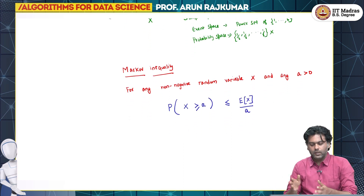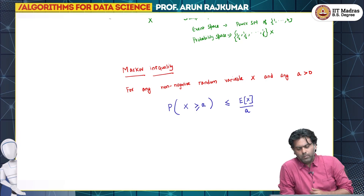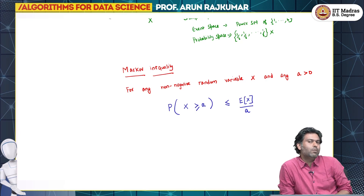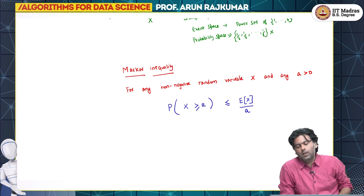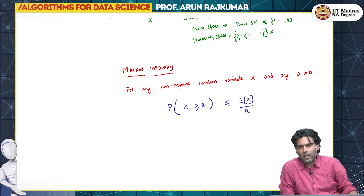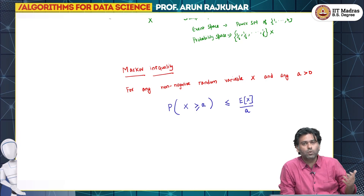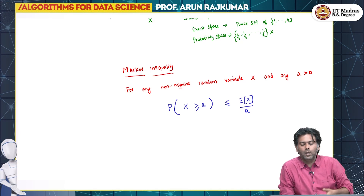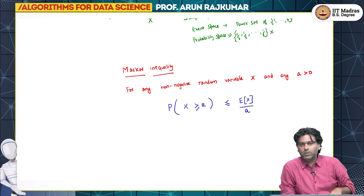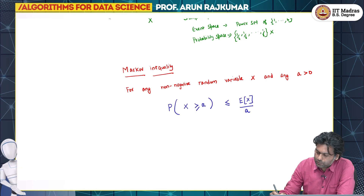Let us look at this statement and understand what it means. It means that I am asking: what is the chance if I do an experiment with some random variable about which I do not know much except its mean — but still I want to ask what is the chance that this experiment will lead to a value greater than or equal to some number A? I will not be able to calculate the exact probability simply because I do not have the distribution. The distribution may be too complicated to compute exactly.